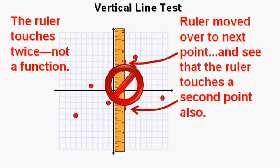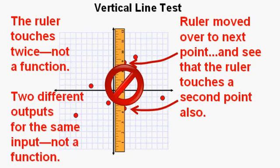The ruler touches twice and is, therefore, not a function. Two different outputs for the same input, not a function.